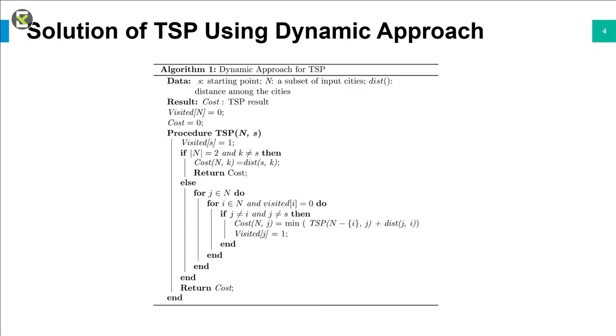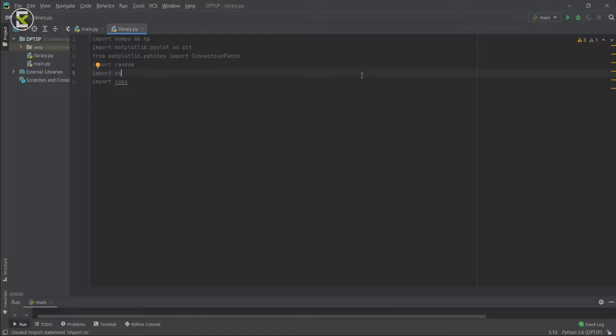We can see dynamic programming in action in this pseudocode. So when we run this program, it will use previously calculated costs in our current calculation.